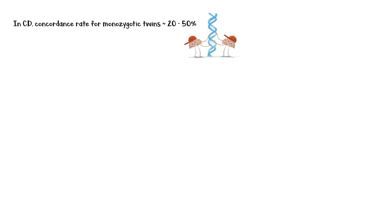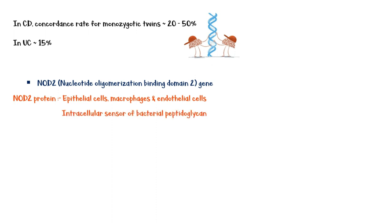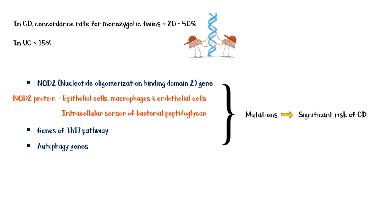In Crohn's disease, the concordance rate for monozygotic twins is about 20–50%, and in ulcerative colitis it is about 15%. The major gene associated with inflammatory bowel disease is the nucleotide oligomerization binding domain 2 gene. NOD2 protein is expressed in epithelial cells, macrophages, and endothelial cells, and acts as an intracellular sensor of bacterial peptidoglycan. In addition to the NOD2 gene, genes of the TH17 pathway and autophagy genes are also associated with the disease. Mutations in these genes lead to a significant risk of developing Crohn's disease.